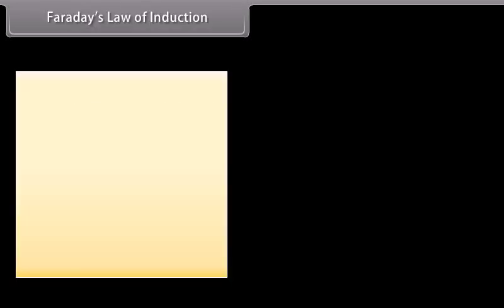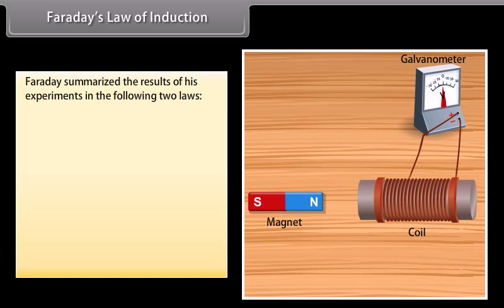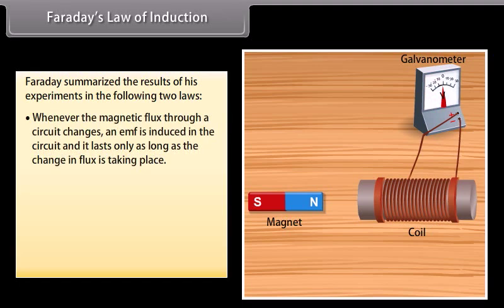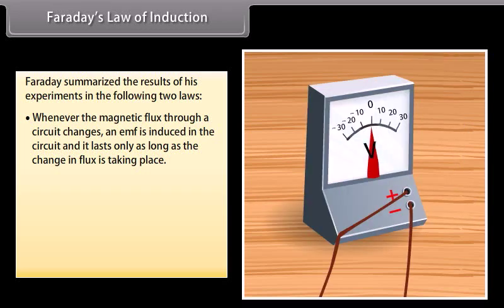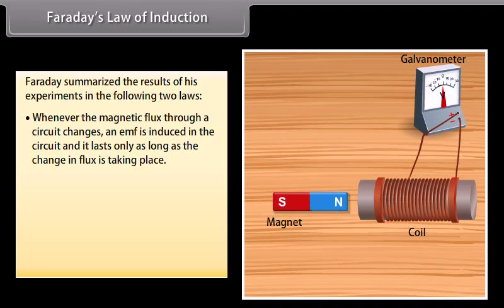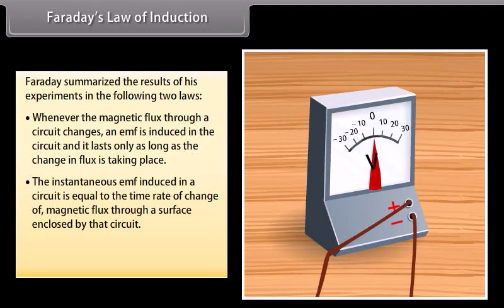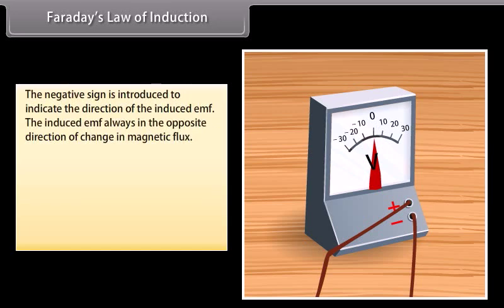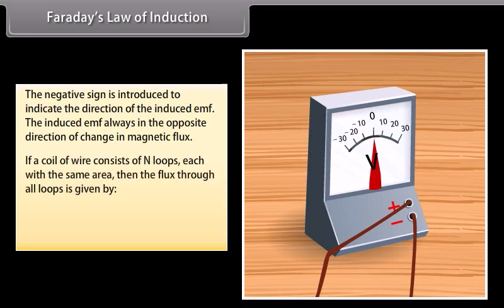Faraday's law of induction. Faraday summarized his experiments in two laws: Whenever the magnetic flux through a circuit changes, an EMF is induced in the circuit, lasting only as long as the change in flux is taking place. The instantaneous EMF induced equals the time rate of change of magnetic flux: E = −dΦ_B/dt. The negative sign indicates the direction of the induced EMF, which always opposes the change in magnetic flux. If a coil has N loops, the flux through all loops gives E = −N dΦ_B/dt.